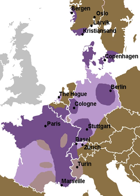Its place of articulation is uvular, which means it is articulated with the back of the tongue at the uvula. Its phonation is voiced, which means the vocal cords vibrate during the articulation. It is an oral consonant, which means air is allowed to escape through the mouth only. It is a central consonant, which means it is produced by directing the airstream along the centre of the tongue, rather than to the sides.